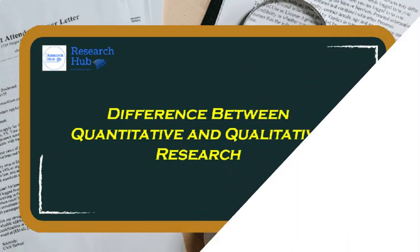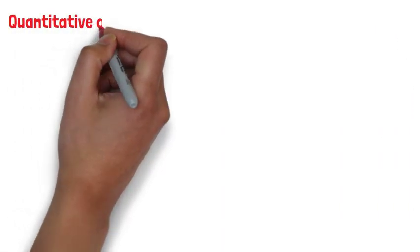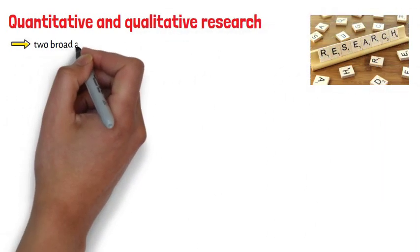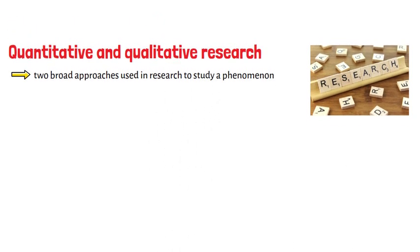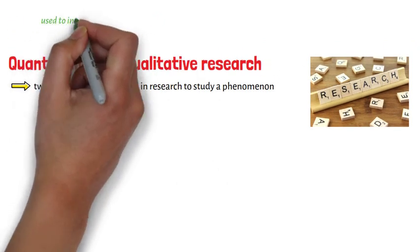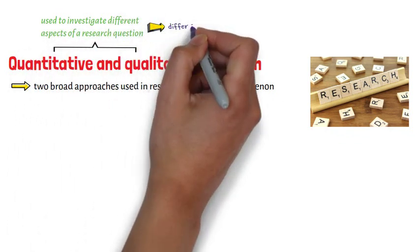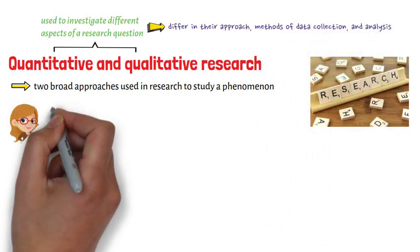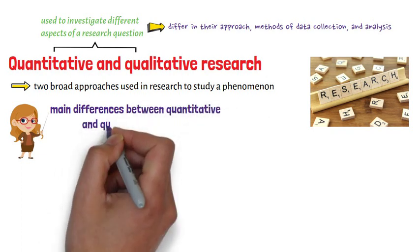Difference between quantitative and qualitative research. Quantitative and qualitative research are two broad approaches used in research to study a phenomenon. While both methods are used to investigate different aspects of a research question, they differ in their approach, methods of data collection, and analysis. The following are the main differences between quantitative and qualitative research.